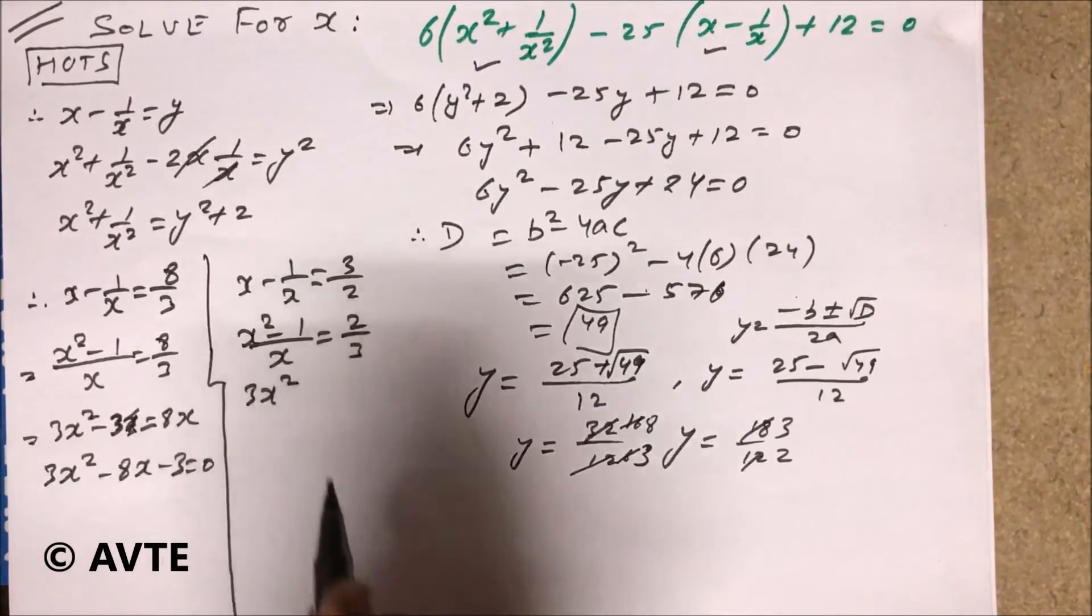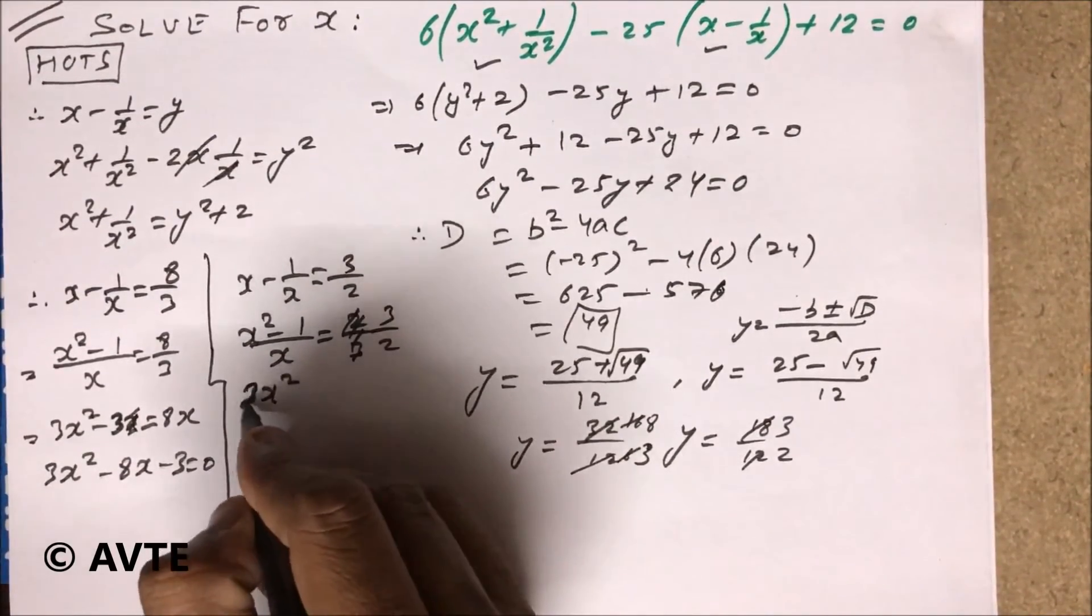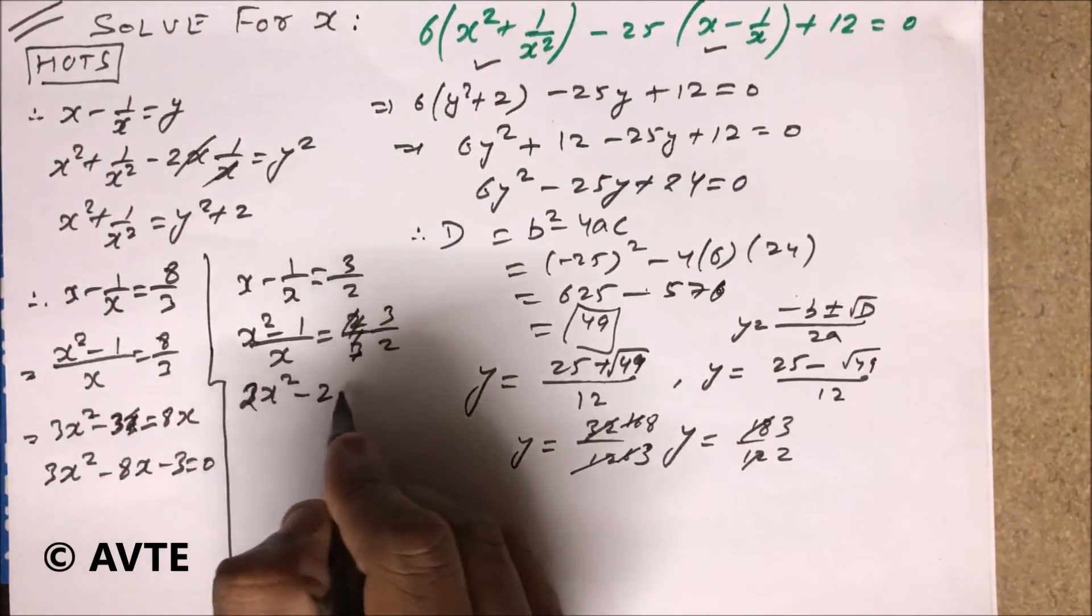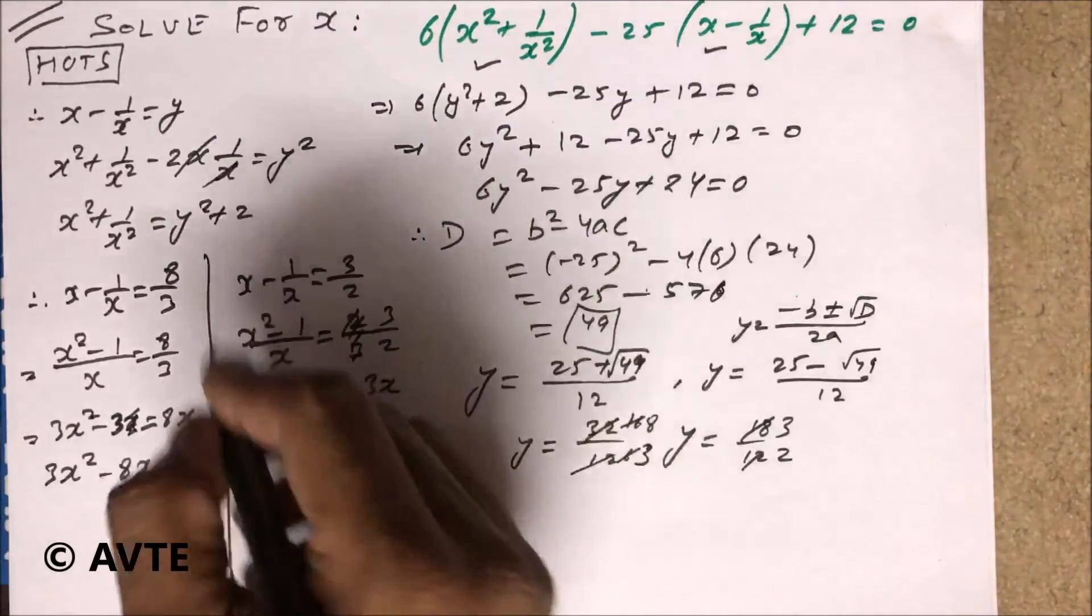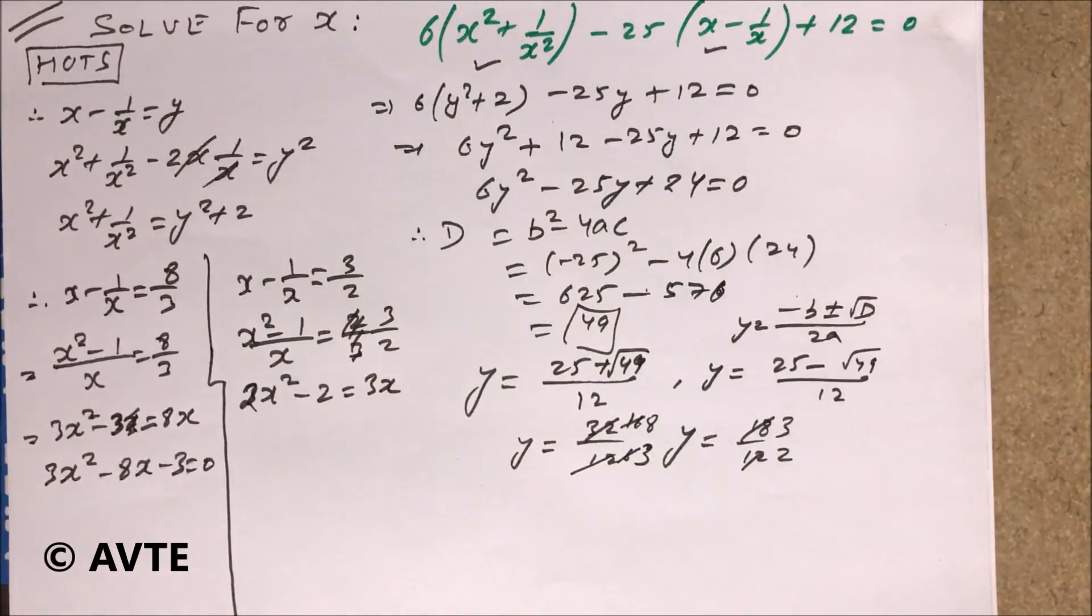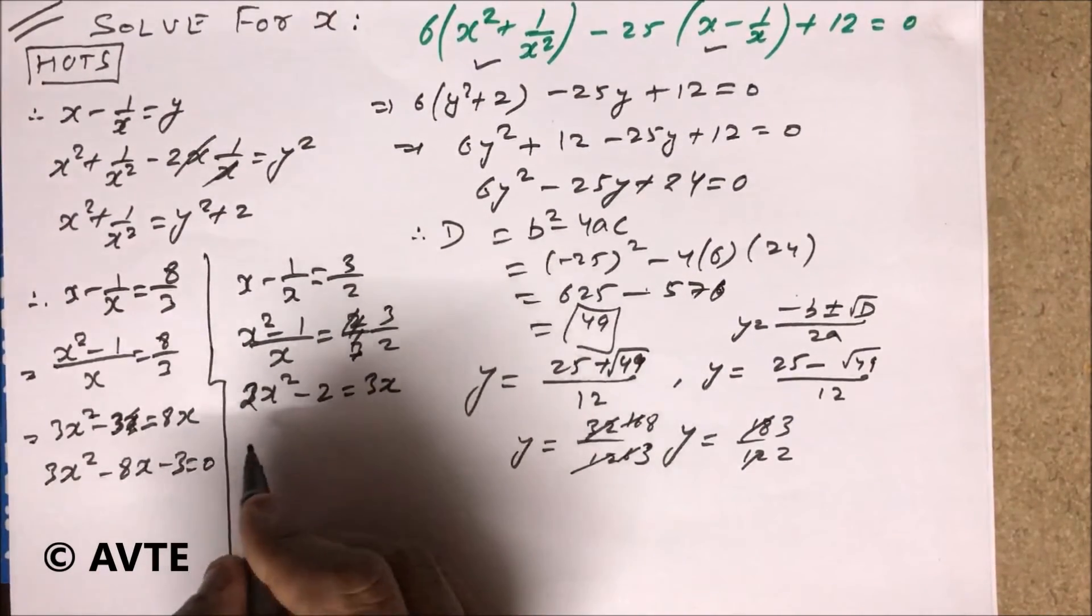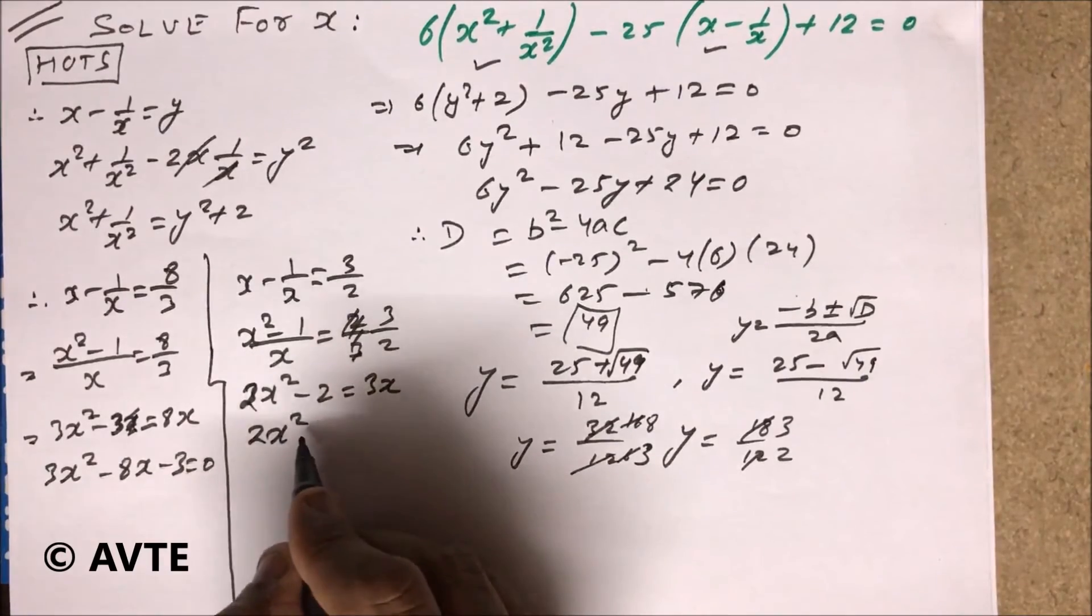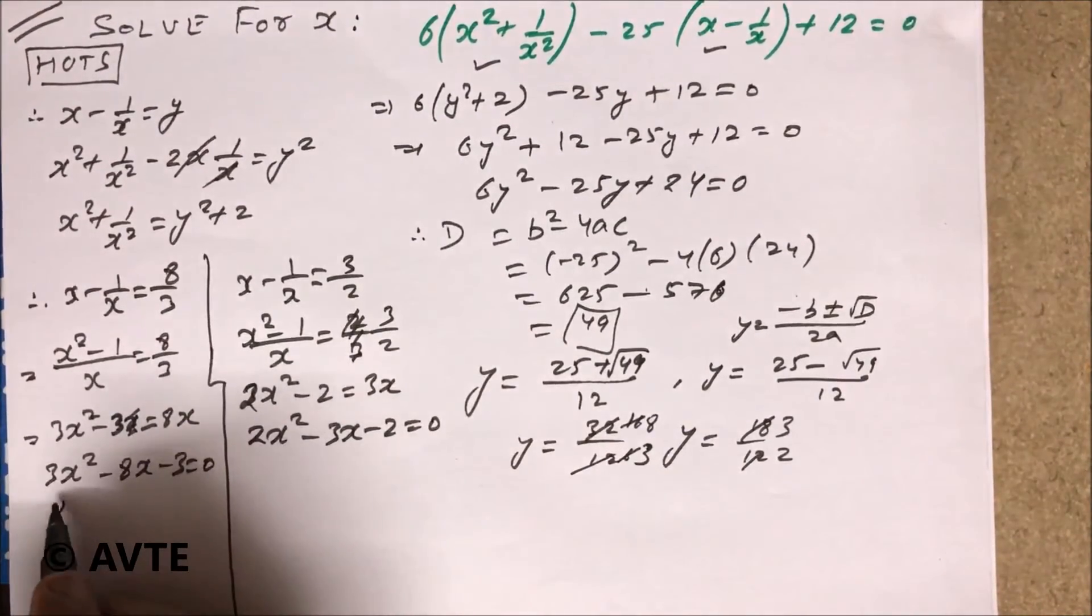Sorry this is 3 by 2. This is 2x square minus 2 is equal to 3x. Don't be in a hurry. This is a mistake because when we are doing fast in the mind and the same answer is not coming to your hand, it might be some mistake. So be careful. 2x square minus 3x minus 2 is equal to 0.